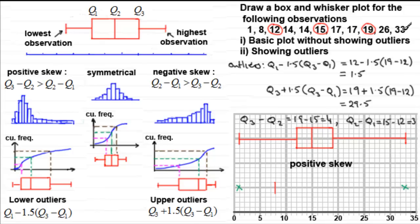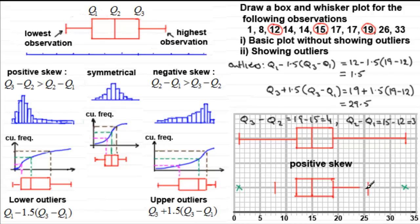With 33 marked as an outlier, 26 becomes the highest non-outlier value, which we mark with a line. The quartiles remain the same as before, so we mark in Q1, Q2, and Q3. We complete the box and draw the whiskers, with outliers marked with crosses. You can have more than one outlier on each side, or sometimes there might not be any outliers at all. That's how we work out and plot outliers.